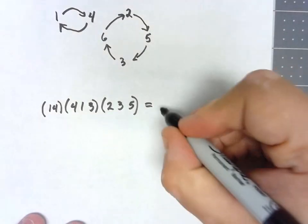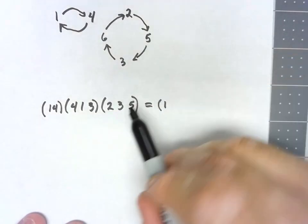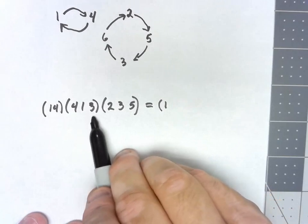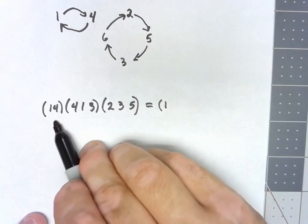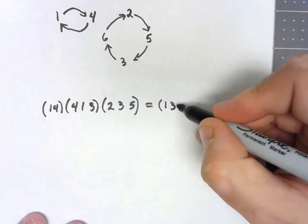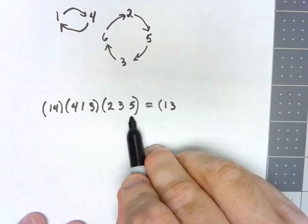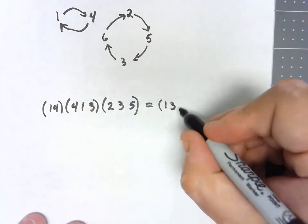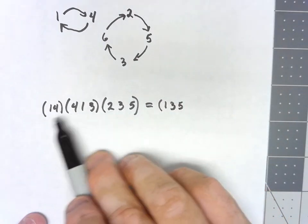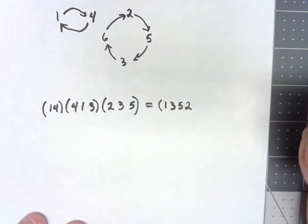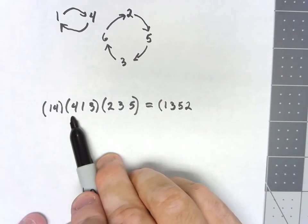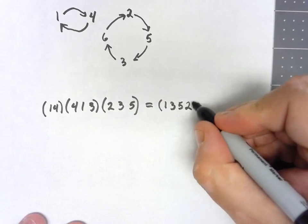I'm always going to start with what happens to 1. 1 isn't affected by this thing. It's not part of this cycle. So I can just skip over to the next one. 1 goes to 3, and then 3 isn't affected by this cycle. So that must mean that altogether, 1 has to go to 3. Then I'm going to pick it up from there. 3 goes to 5. 5 isn't affected by that cycle. So 3 goes to 5. 5 goes to 2. 2 isn't affected by that cycle or that cycle. So we've got 2. 2 goes to 3. 3 goes to 4. And 4 goes to 1. So I finally can close off that cycle.